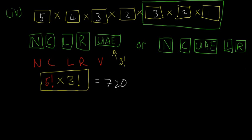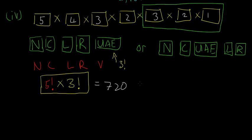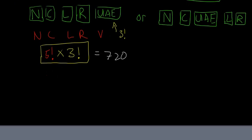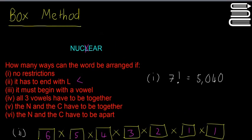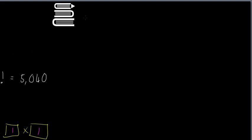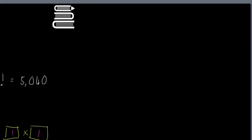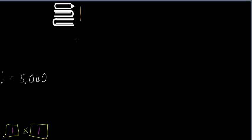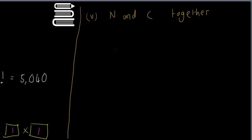Those are the first four questions. The last two come together — the second last is similar to the vowels-together question. Part five asks: how many ways can you arrange the letters if N and C have to be together? We approach this the same way as before.